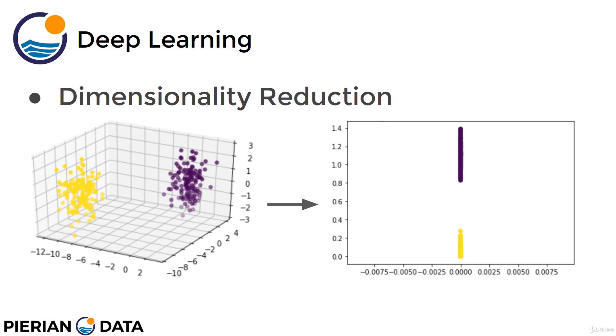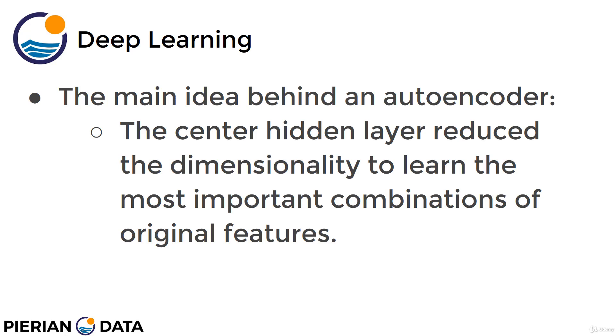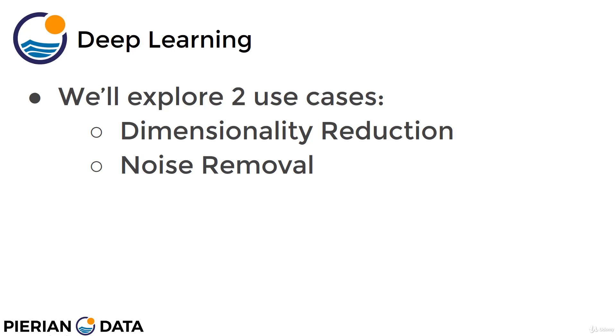The main idea behind an autoencoder is the center hidden layer reduce the dimensionality to learn the most important combinations of original features. We're going to see two applications of the autoencoder, and they both use an autoencoder but they use them in very different ways, which is why this is such an interesting network architecture. Because even though you have the same network architecture of inputs being reduced and then matching the output size, you can use them in a wide variety of tasks. So we're going to explore two use cases. One is the more obvious use case of dimensionality reduction, where you essentially after training an autoencoder, split it in half and just extract the hidden layer outputs. And then the second use case is a really interesting one for noise removal. You'll actually have that hidden layer essentially learn how to filter out noise when reproducing the output. So both of these use autoencoders, but they use them in really different ways and they're super interesting problem sets. Let's go ahead and in the next lecture, learn how we can detach an autoencoder into two separate components in order to perform dimensionality reduction.